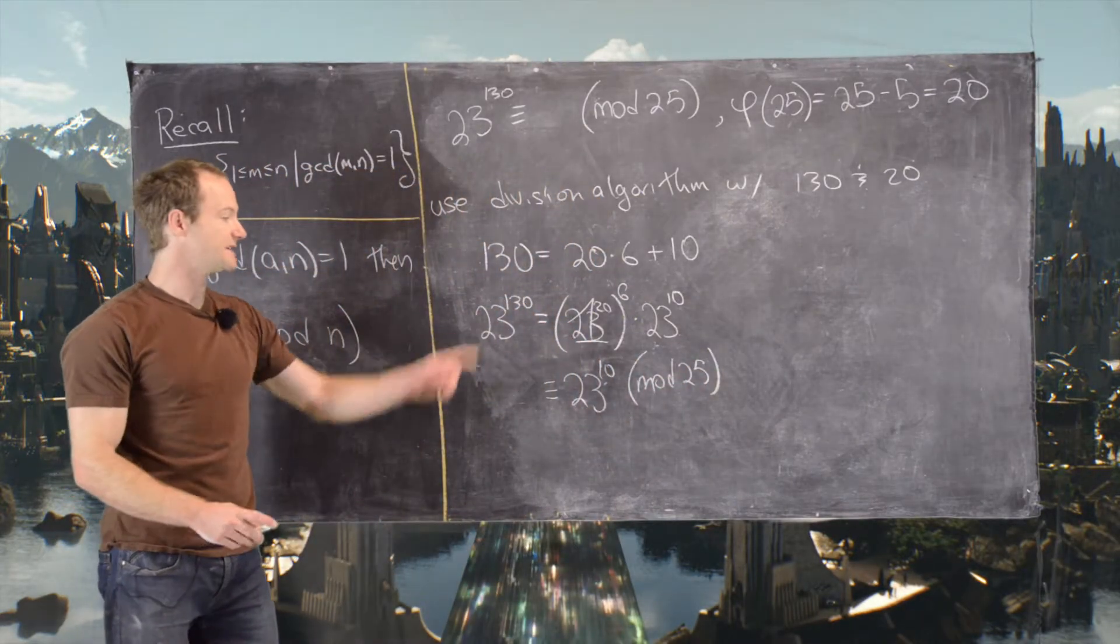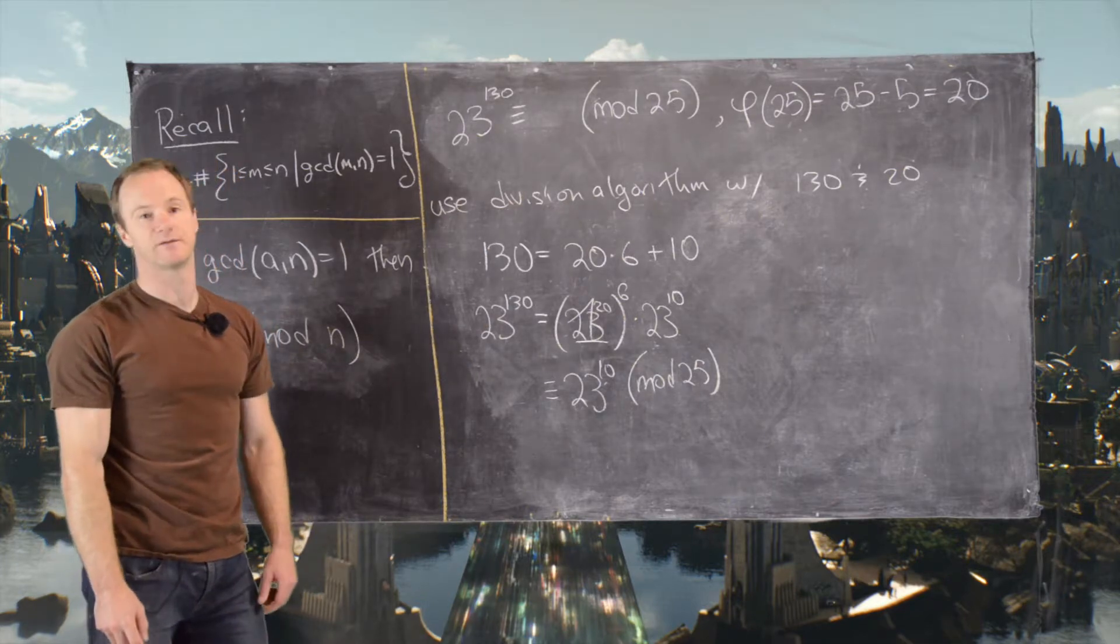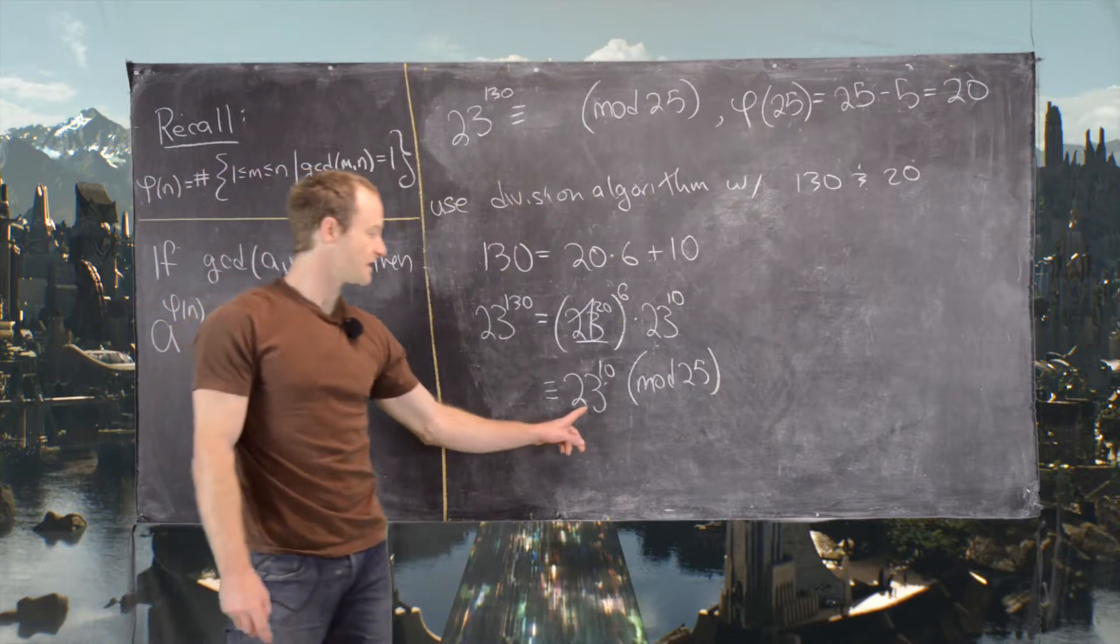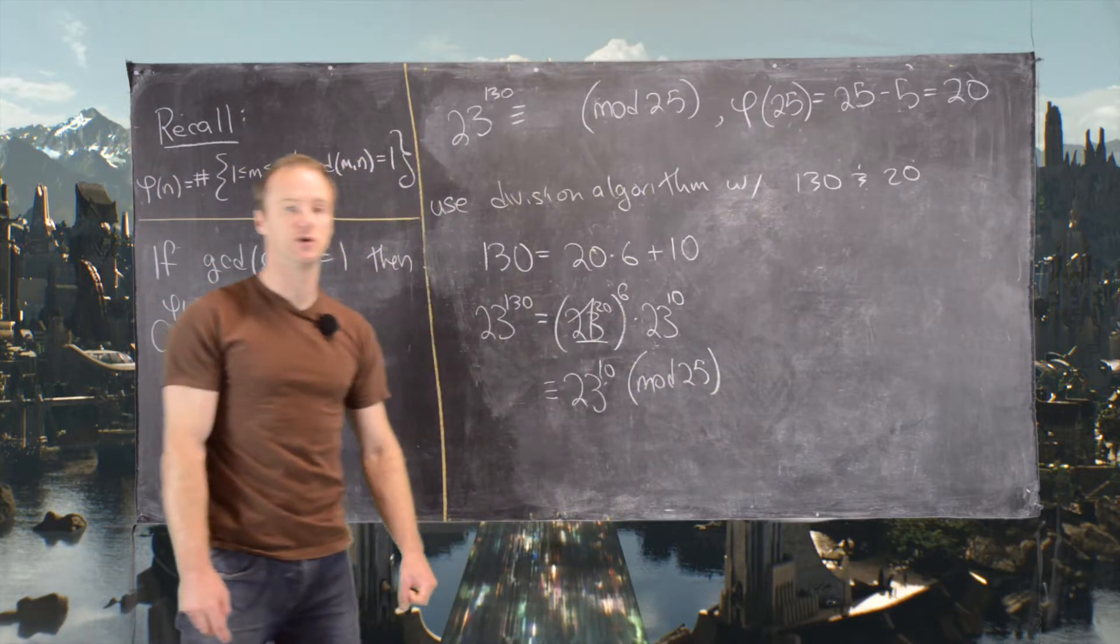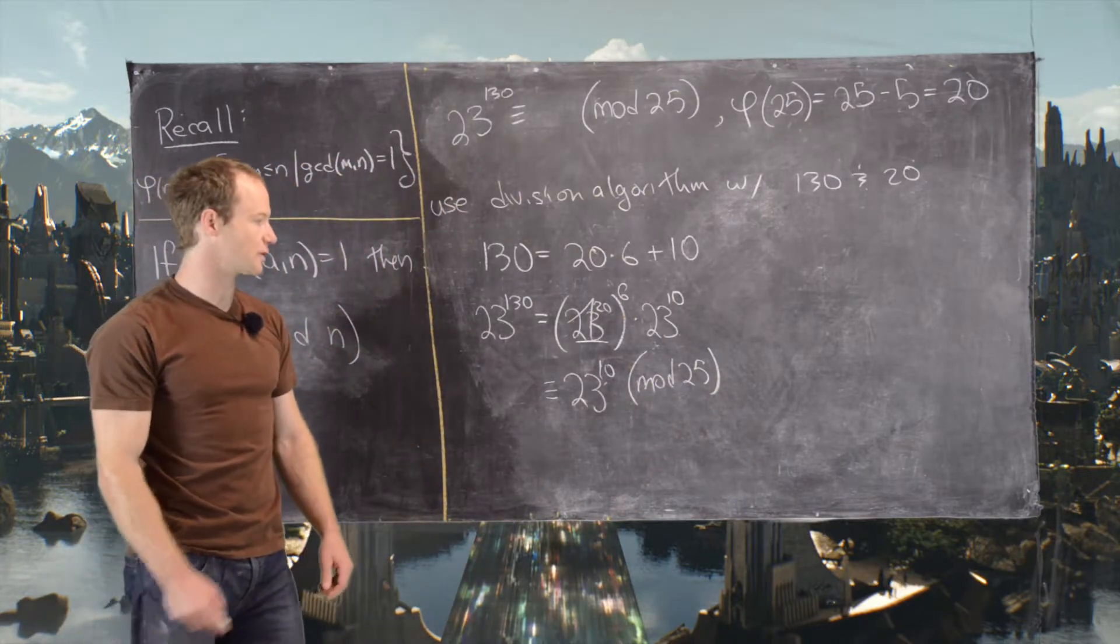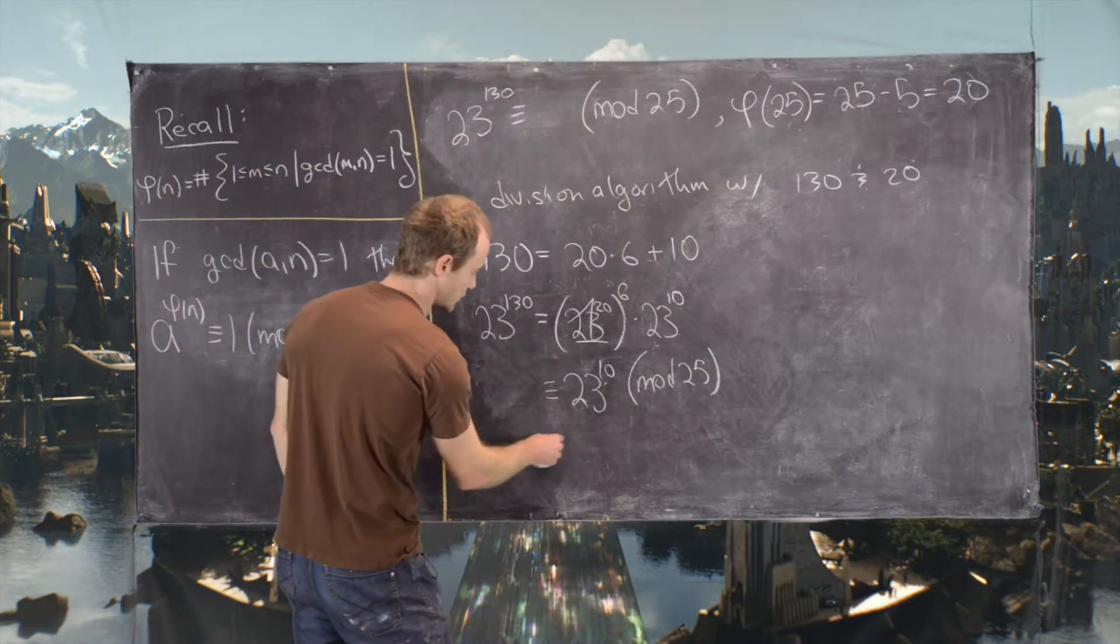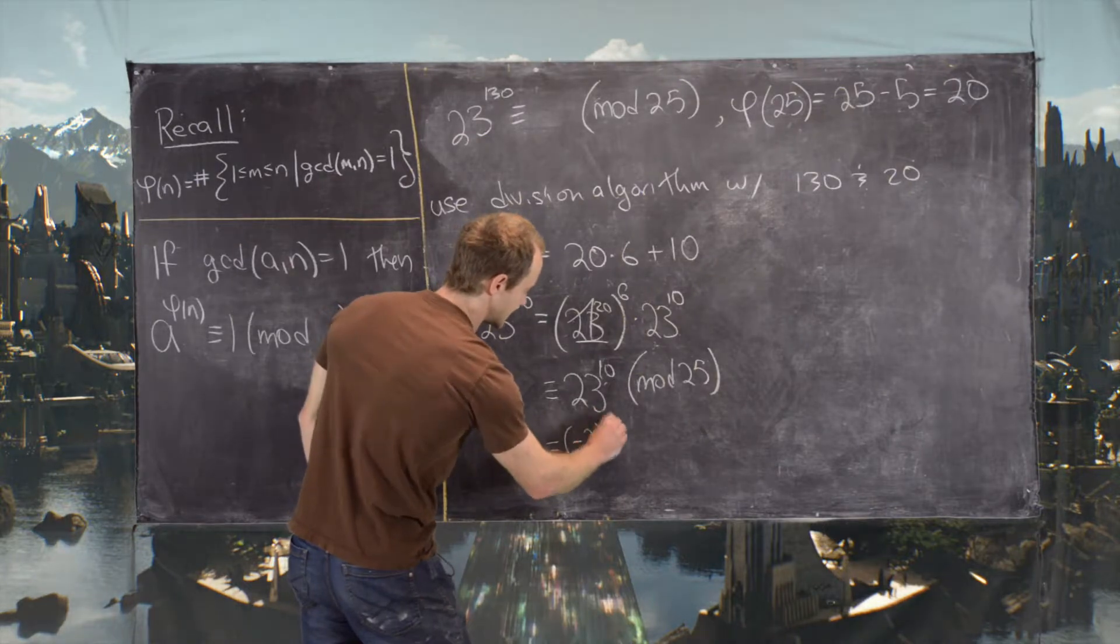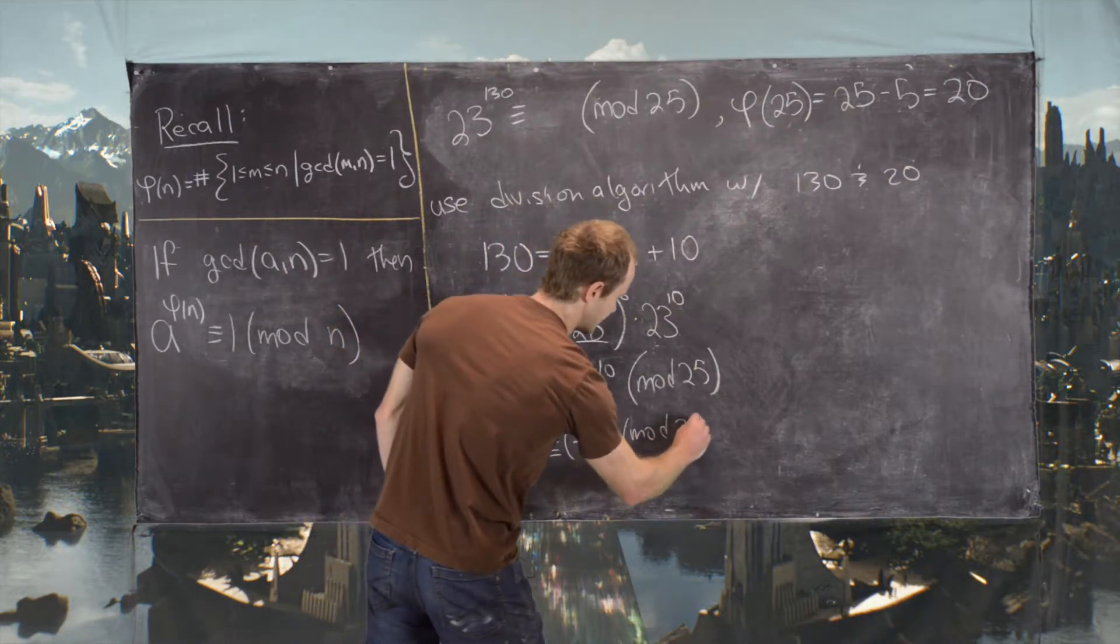Now this may seem like it's still quite a difficult problem to solve, but we can actually use a trick here, and that is that 23 and negative 2 are congruent modulo 25. So instead of looking at 23 to the 10, let's look at negative 2 to the 10 mod 25.